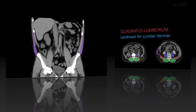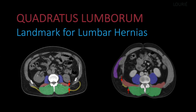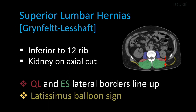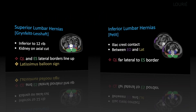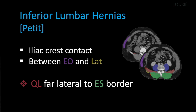In conclusion, in addition to recognizing the traditional surrounding structures, I have emphasized the quadratus lumborum muscle, which is — though underappreciated in the published literature — in my belief the key, reliable, orienting landmark of the lumbar region. To summarize: for a superior lumbar hernia, find the tip of the 12th rib, look for the kidney on the same axial cut, and using the quadratus lumborum landmark, the QL and erector spinae borders will line up in the same AP plane — and look for the latissimus balloon sign. For inferior lumbar hernias, you will see contact with the iliac crest, look for the gap between the external oblique and latissimus dorsi, and for the QL landmark, the QL will be far lateral to the erector spinae lateral border.